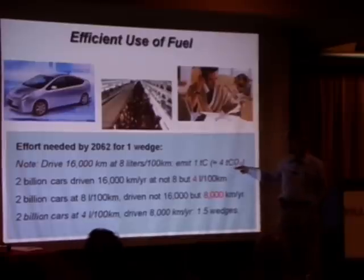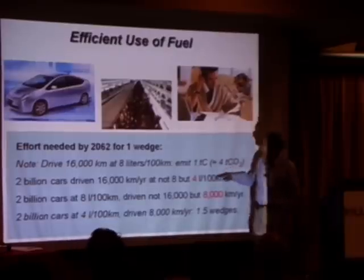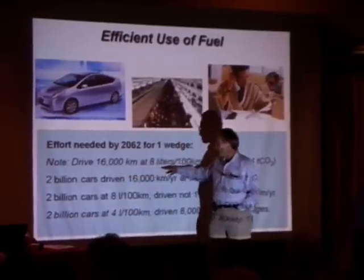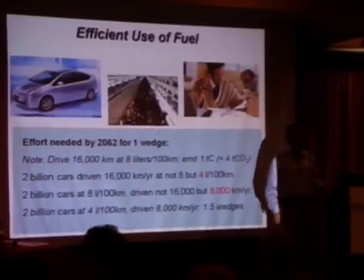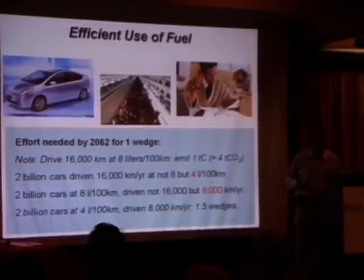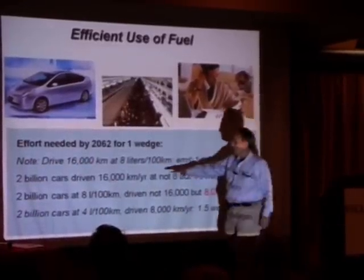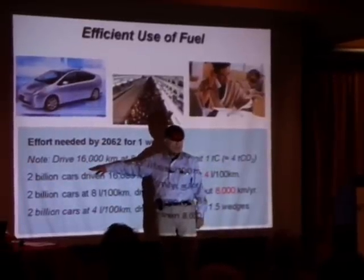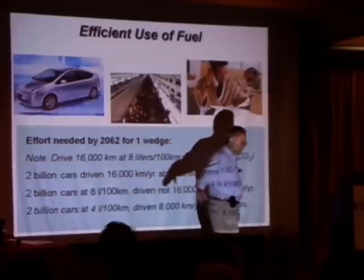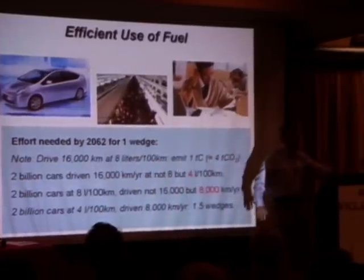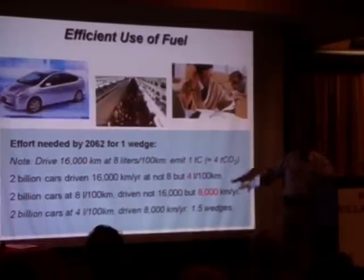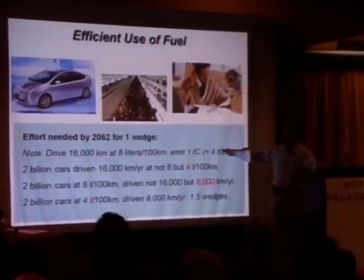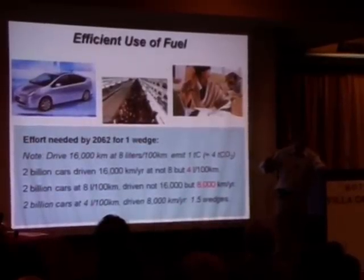You get about four tons of CO2 if you drive a vehicle 16,000 kilometers a year at about eight liters per hundred kilometers. Some cars are better than eight; 16,000 kilometers a year is a long distance except for commuters. You would have a wedge if you changed either of those numbers by a factor of two — for example, driving all those cars at four liters per hundred instead of eight gives a wedge.